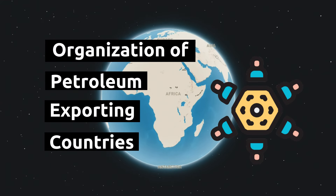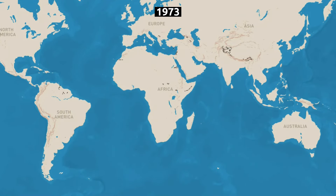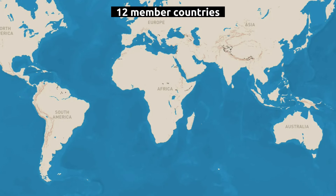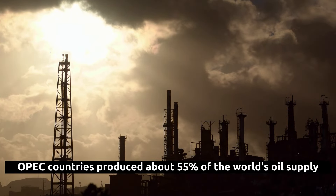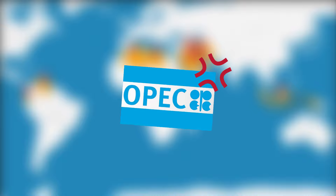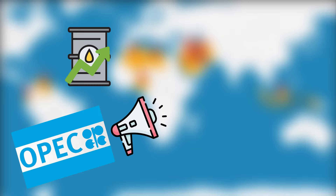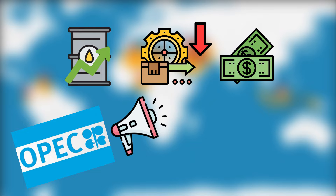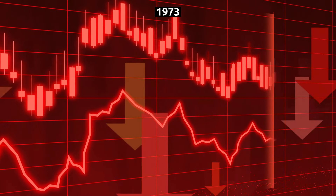OPEC, which stands for the Organization of the Petroleum Exporting Countries, is a group of countries that cooperate to manage the production and price of oil. In 1973, OPEC consisted of 12 countries, including Algeria, Indonesia, Iran, Iraq, Kuwait, Libya, Nigeria, Qatar, Saudi Arabia, Venezuela, the United Arab Emirates, and Ecuador. OPEC countries produced about 55% of the world's oil supply. In the early 1970s, OPEC had become increasingly dissatisfied with the low prices it was receiving for its oil, and decided to cut production and demand higher prices, leading to the 1973 embargo against countries that supported Israel during the Yom Kippur War.